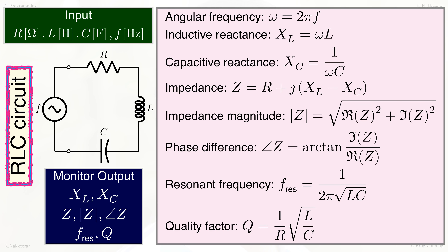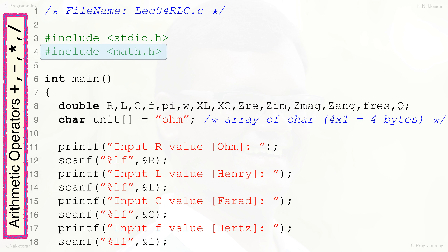A circuit made of resistor, inductor, and capacitor — in short, an RLC circuit — is useful as electronic filters, radio frequency tuning circuits, timer circuits, integrators, differentiators, and more. RLC circuits are also useful to emulate second-order systems, investigate control systems, and analyze signals and systems. The circuit diagram shows the RLC circuit supplied with an AC signal of frequency F. Equations for the RLC circuit parameters can be calculated from R, L, C, and F values. Let us write a C program that calculates RLC circuit parameters after receiving R, L, C, and F values through the keyboard.